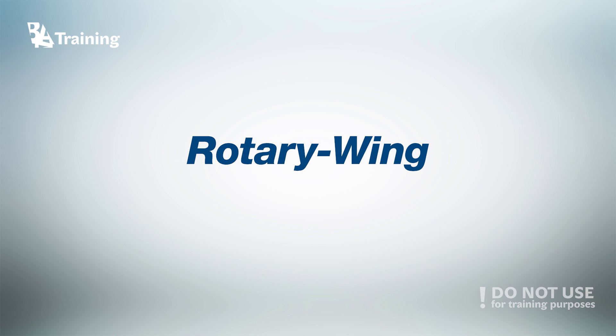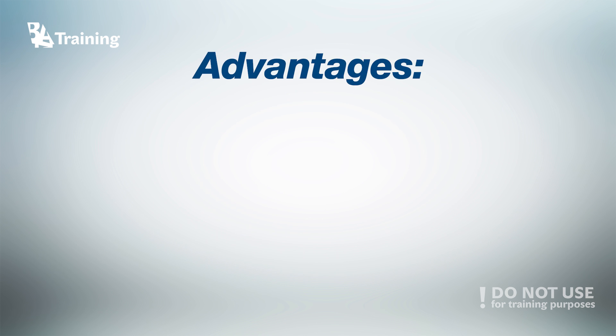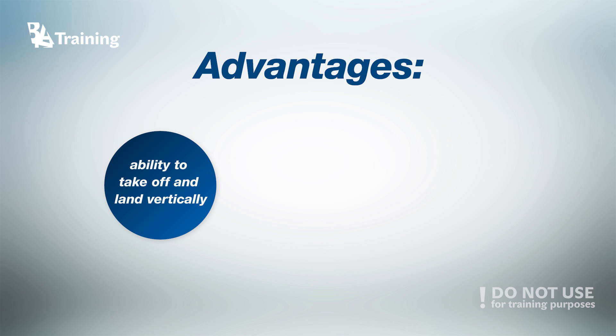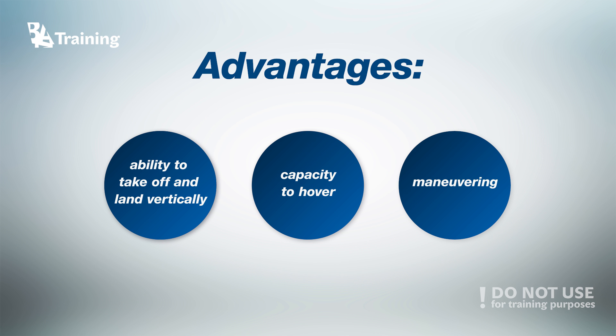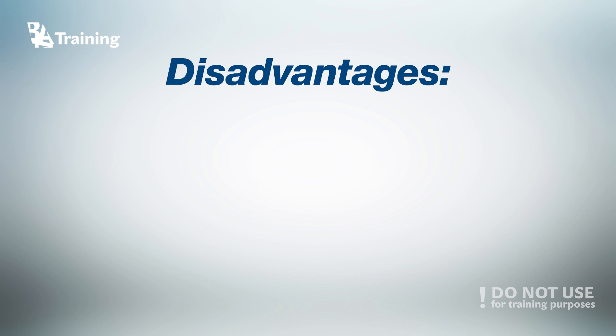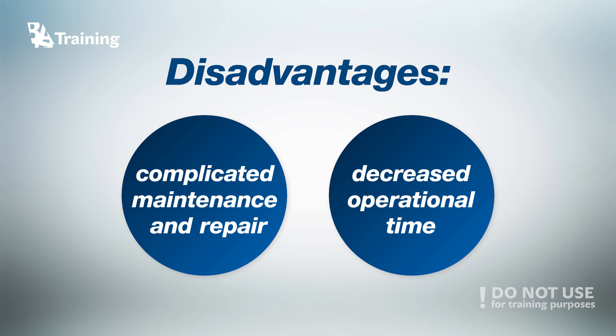Let's look at the second type: rotary-wing drones. Rotary-wing UAVs consist of one rotor – you wouldn't be wrong saying it looks like a small version of a helicopter. The biggest advantage of rotary UAVs is the ability to take off and land vertically, allowing the user to operate within a smaller area with no substantial landing or take-off place required. Their capacity to hang in the air and perform maneuvering makes rotary-wing UAVs well suited to applications like inspections. On the flip side, greater mechanical and electronic complexity translates to more complicated maintenance and repair processes, which means the user's operational time can be decreased.